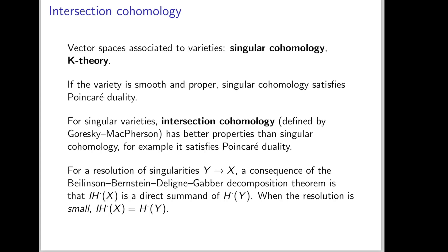One way to study varieties is to look at invariants coming from topology — for example, singular cohomology. This is finite-dimensional when the variety is smooth and proper, and it satisfies Poincaré duality. There is also K-theory, which is infinite-dimensional. A first approach toward singular varieties is to look at theories analogous to these two that preserve these good properties. One such example is intersection cohomology, defined in the 70s, which satisfies a version of Poincaré duality for singular varieties.